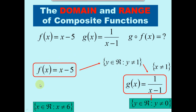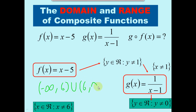So x cannot be 6. However, I can have numbers below 6 and above 6. So the domain starts at negative infinity — not including negative infinity — and goes up to 6, not including 6. Then we create a union: an interval that starts at 6 not including 6 and goes all the way to infinity. In interval notation, that's all numbers below 6 union all numbers above 6 — in neither case including 6. That's our domain.